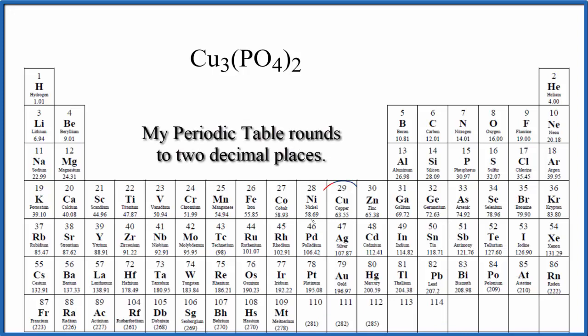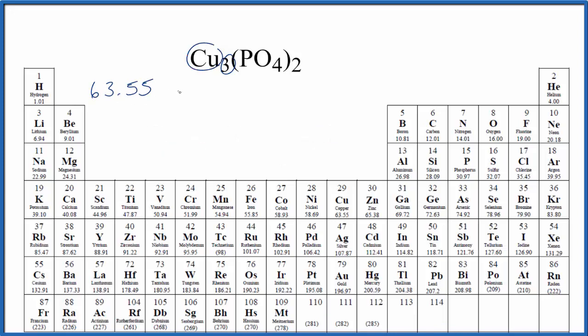So we go to the periodic table, we find copper and that's 63.55 grams per mole. I won't write grams per mole each time, we'll do that at the end. We have three of these copper atoms so we're going to multiply that by three.